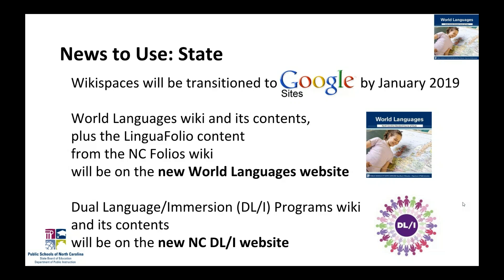I have some state-level news. Those familiar with our World Languages Wiki should know that Wikispaces as a company is going out of business, so our Wiki will be transitioned to Google Sites by January 2019. The World Languages Wiki and its contents, plus the LinguaFolio content on the NC Folios Wiki, will be on our new World Languages website available in January 2019. If you're involved with dual language immersion or DLI programs, that Wiki content will also be on the new NC DLI website, also as Google Sites.